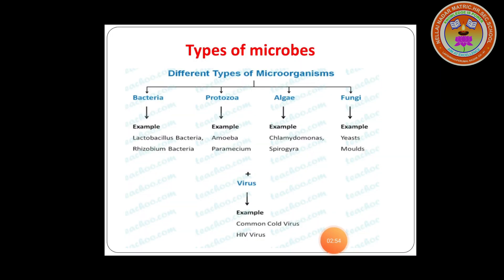All microorganisms are grouped into five categories. They are bacteria, viruses, algae, fungi, and protozoa. Now we will see each one in detail.